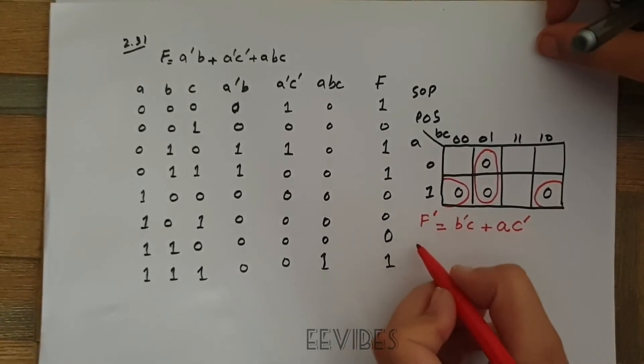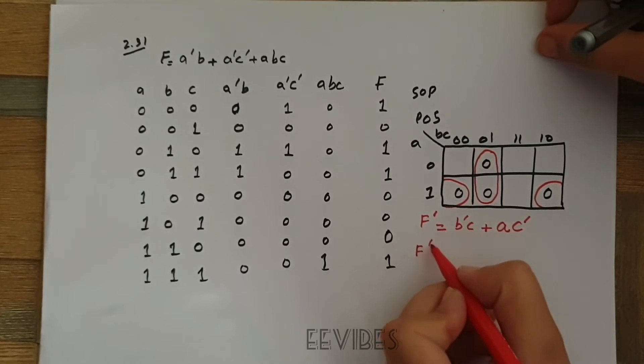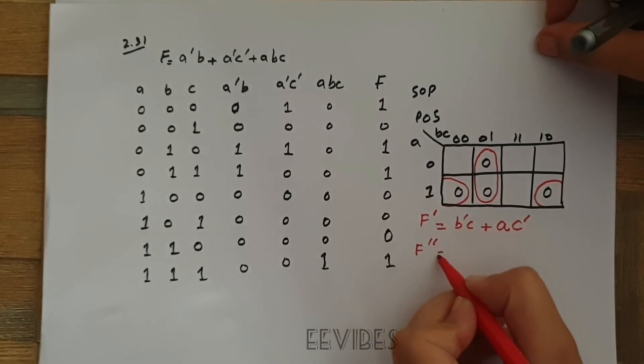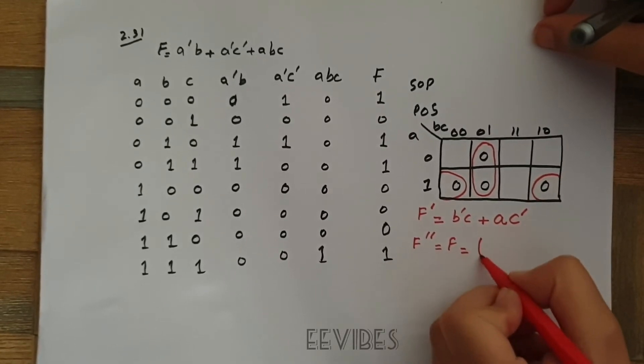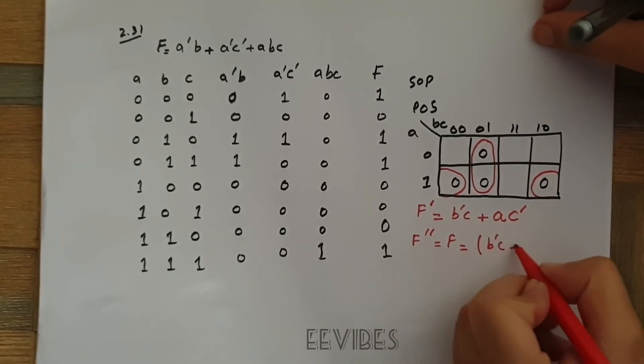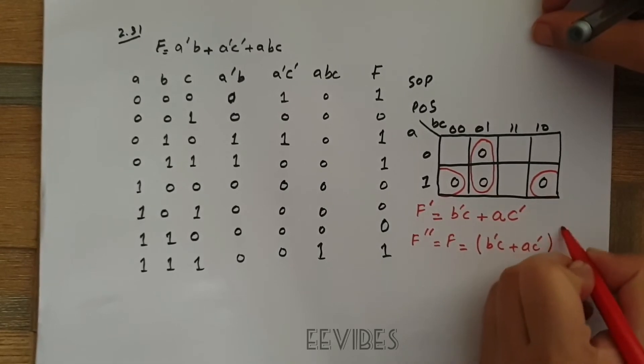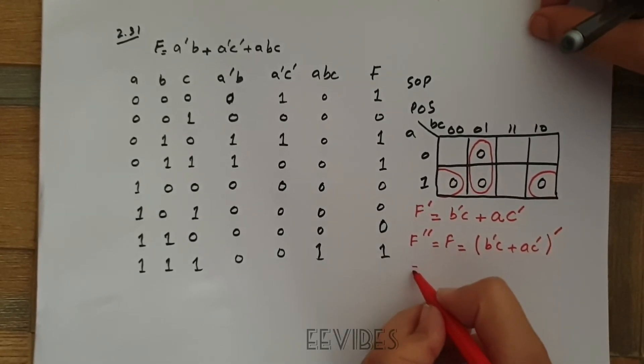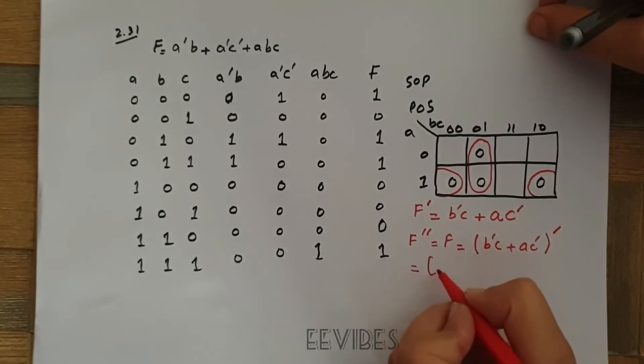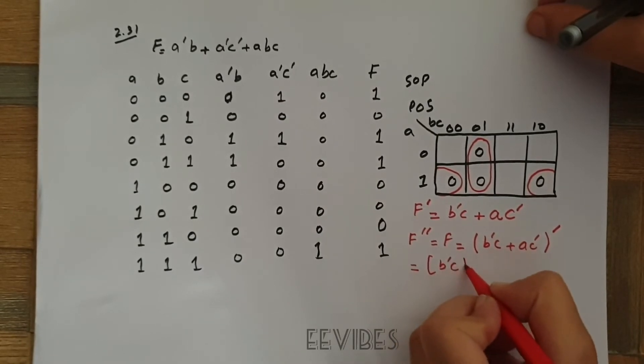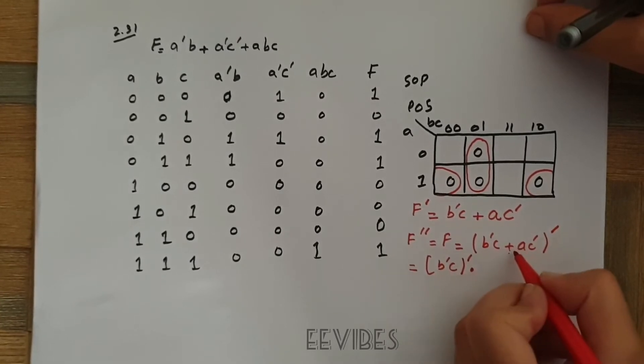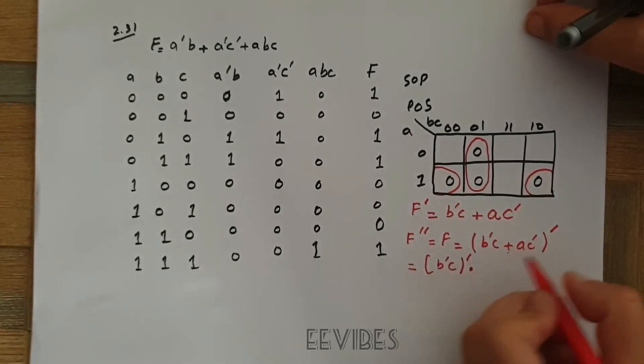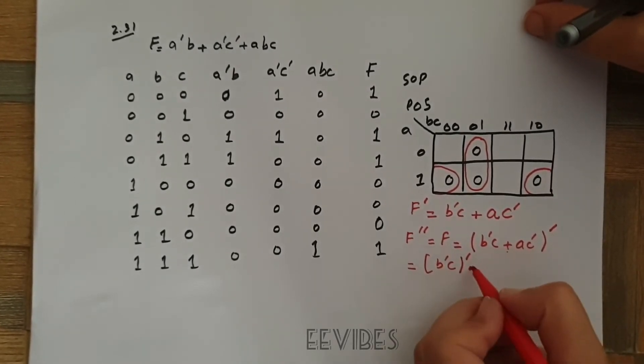Since it's the complement of the function, we will eliminate this complement by taking the dual or double complement of it, which will generate the function itself. So b complement c plus ac complement, whole complement. Now apply De Morgan's theorem according to which the first term is written as it is with the complement, plus is replaced with the multiplication, or the OR is replaced with the AND operations.